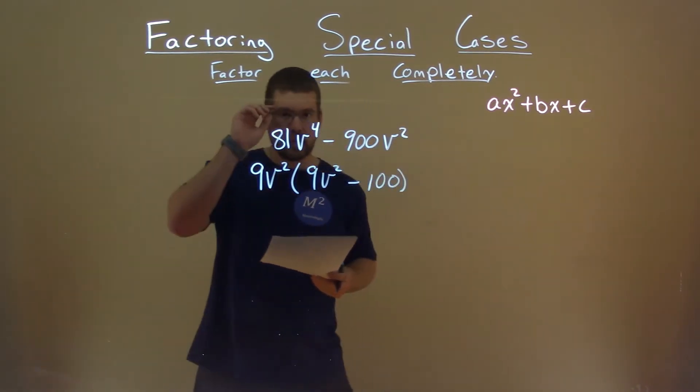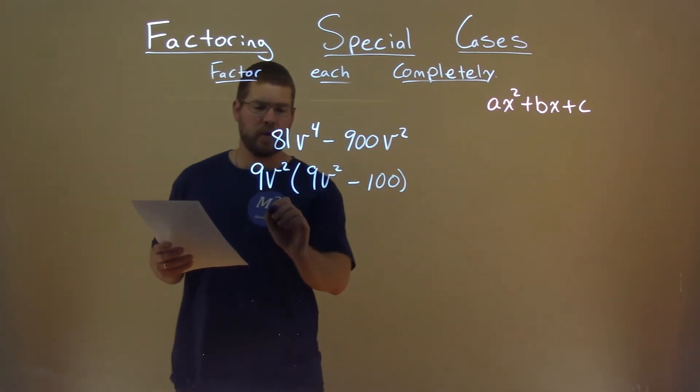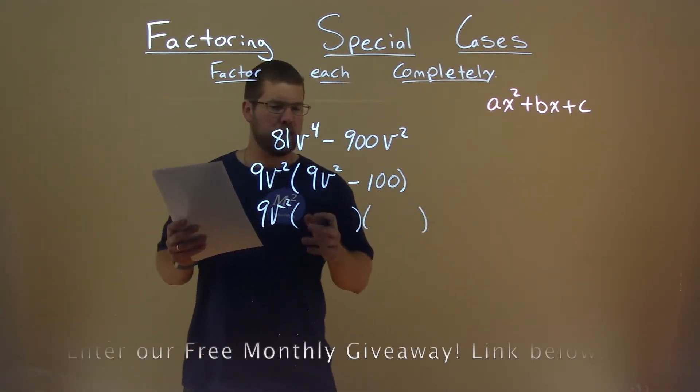So now from here, it's a little more manageable. 9v squared and 100 are both what we call perfect squares. So we bring down this thing, but what does that mean? That means it's a little special case here.